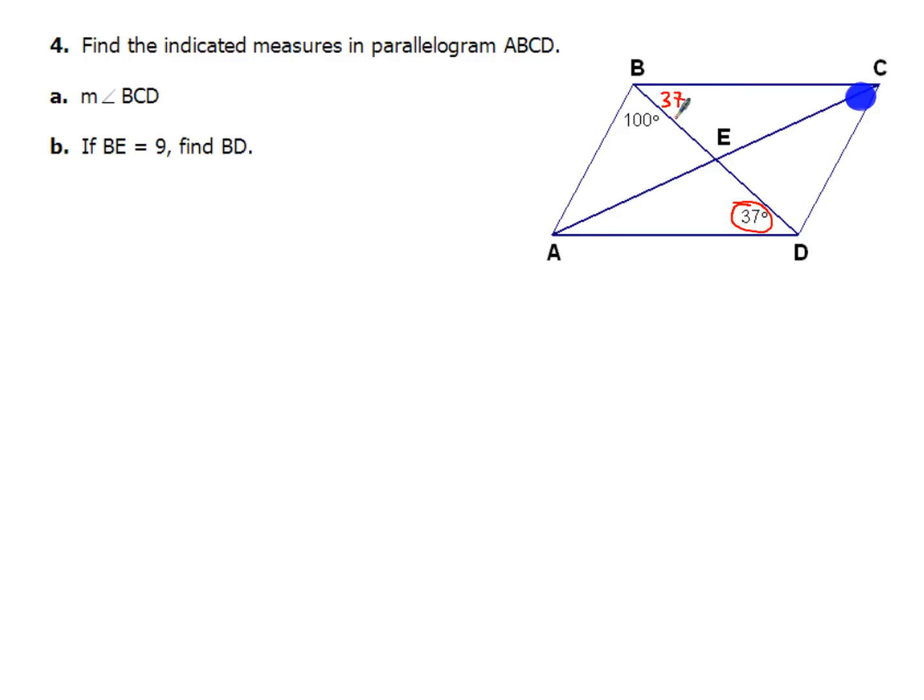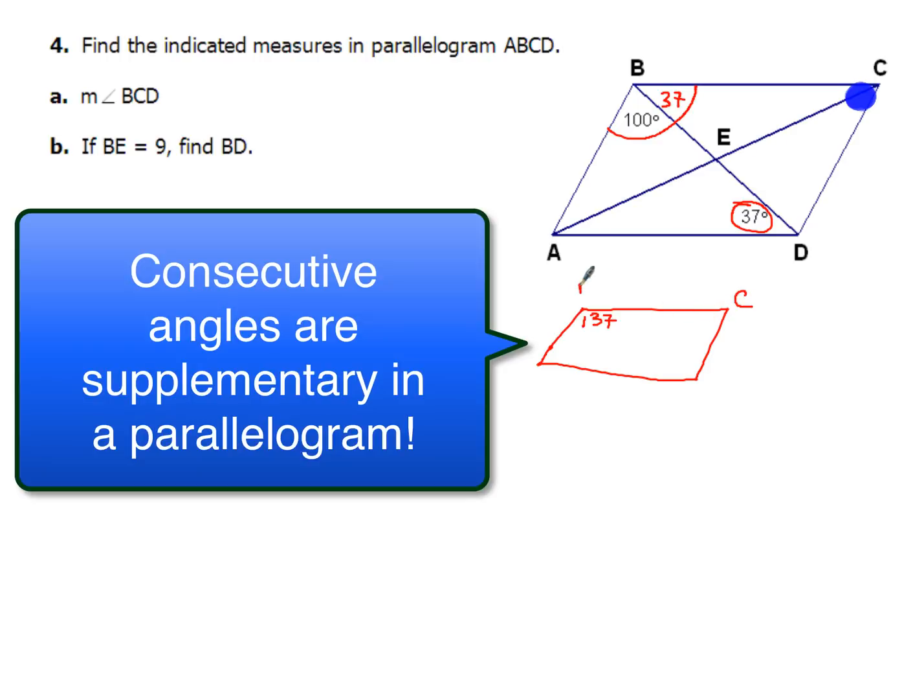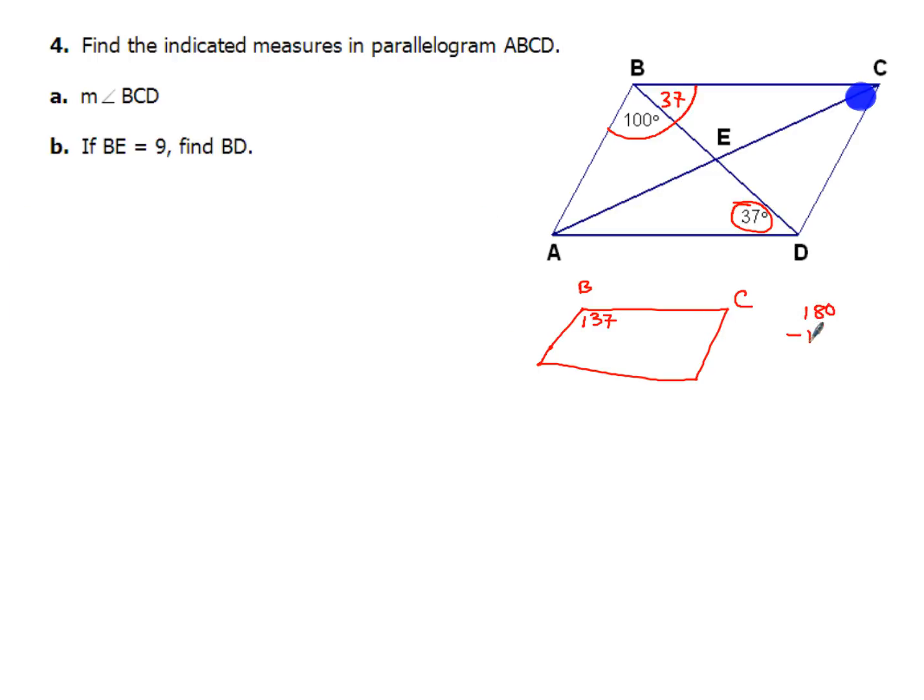Well angle BCD, which is the one I'm trying to find, because I don't know what that angle is, those two angles have to be supplementary. And if they're supplementary, that means they add up to 180. So 180 minus 137, well that's just going to give me 43. So the measure of angle BCD is going to be 43 degrees.